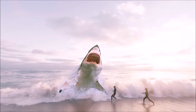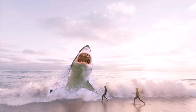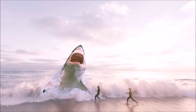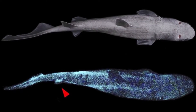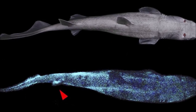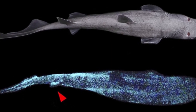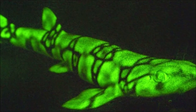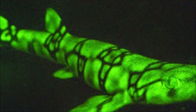De las 368 especies, solo el tiburón blanco, el tiburón tigre, el tiburón azul, el tiburón martillo, el tiburón toro y el tiburón sarda son peligrosos para el ser humano. Recientemente se han descubierto tres nuevas especies de tiburones bioluminiscentes: el tiburón linterna del sur, el tiburón linterna de vientre negro y el tiburón cometa. Este último es ahora el animal vertebrado luminiscente más grande conocido.